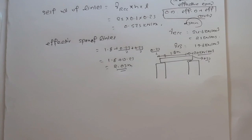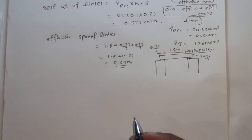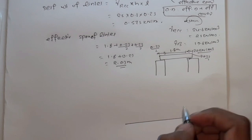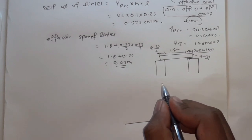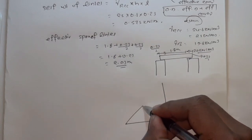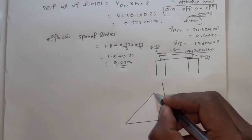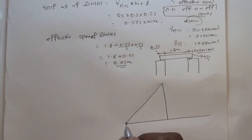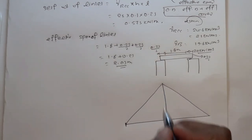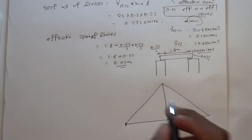The load on the lintel forms a 45-degree triangular distribution, extending from a maximum at the center of the span to zero at the supports. This means the load at the supports is zero, and the maximum load is at the center of the lintel span. This is the nature of the triangular load distribution on the lintel.